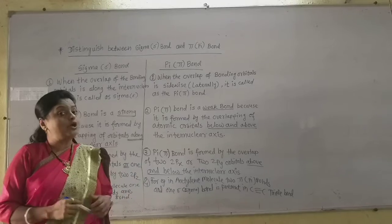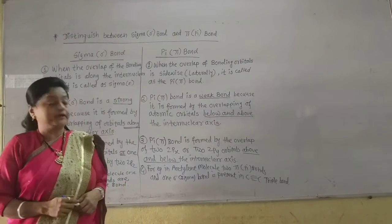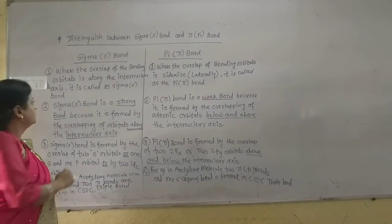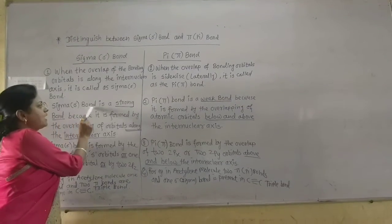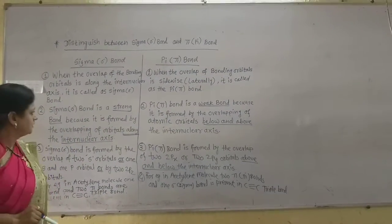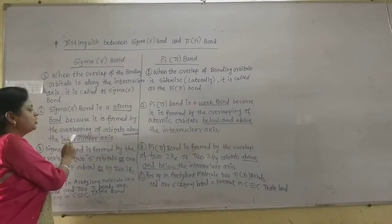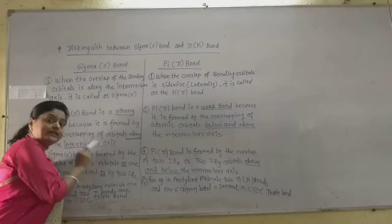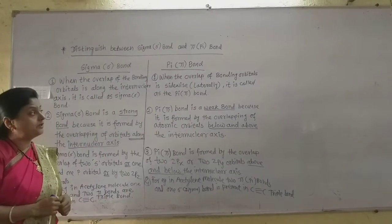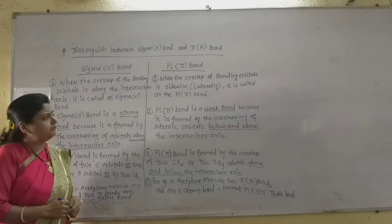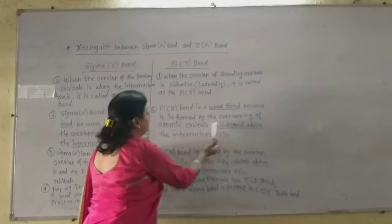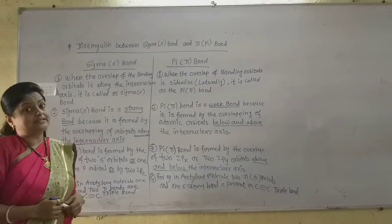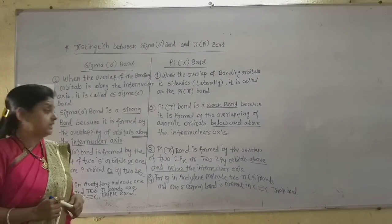That overlap is called pi overlap and the bond formed is called a pi bond. The second difference is that the sigma bond is a strong bond because it is formed by the overlapping of atomic orbitals along the inter-nuclear axis. The pi bond is a weak bond because it is formed by the overlapping of atomic orbitals above and below the inter-nuclear axis.